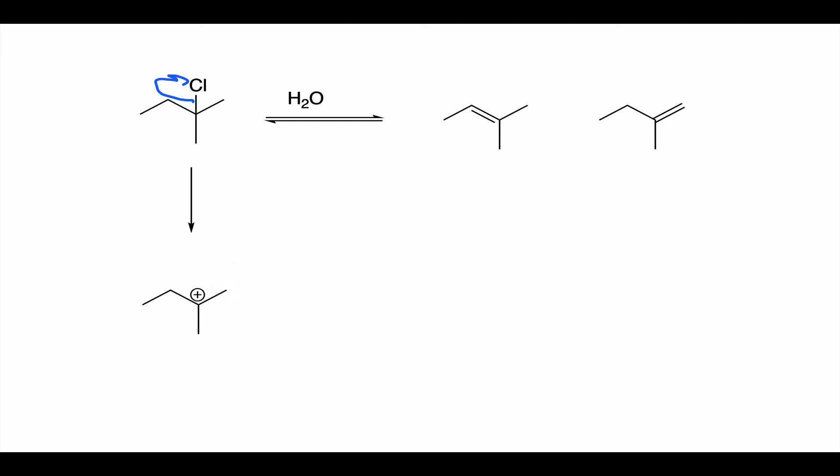There are actually six ways of making the terminal alkene because there are six protons on those methyl groups, and only two ways of making the internal alkene. If this reaction were under kinetic control, the major product should be the terminal alkene — it's three times more likely statistically (6-to-2 ratio). But since the major product shown is the internal alkene, that tells you the reaction is under thermodynamic control, not kinetic control.